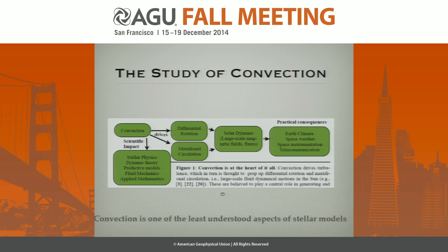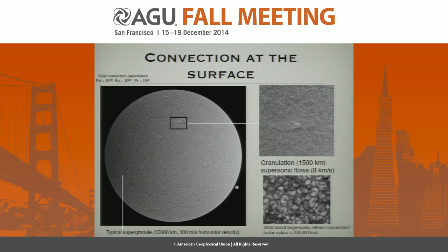We have numerous satellites and ground-based instruments that look at the sun. The observations themselves are really quite remarkable — very high-quality, very high-resolution. This in particular is taken by the Helioseismic and Magnetic Imager, a satellite looking at the surface of the sun. You see a mean gradient in Doppler velocity — bright here and dark on this side — that's the rotation of the sun itself.